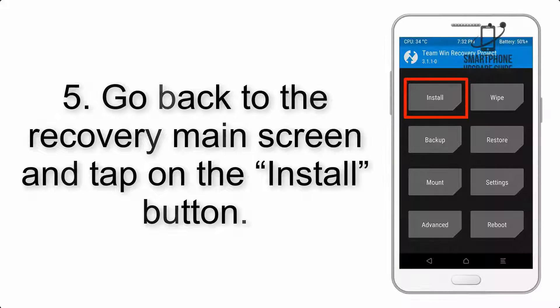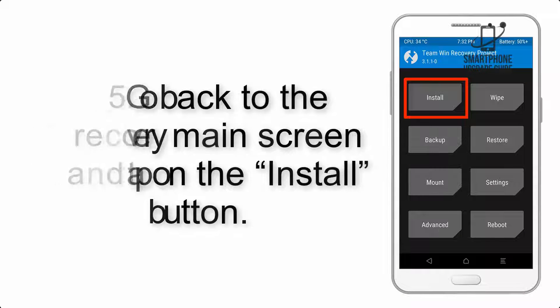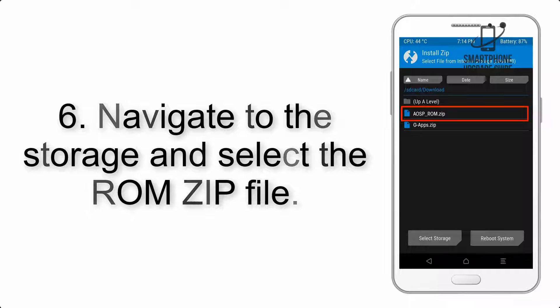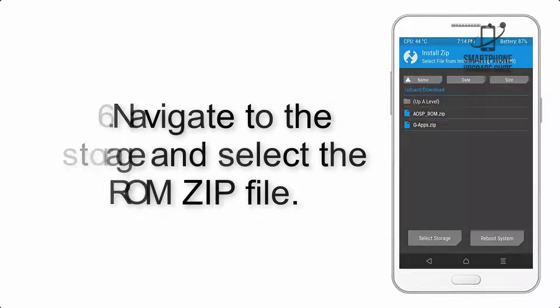Step 5: Go back to the recovery main screen and tap on the Install button. Step 6: Navigate to the storage and select the ROM zip file.